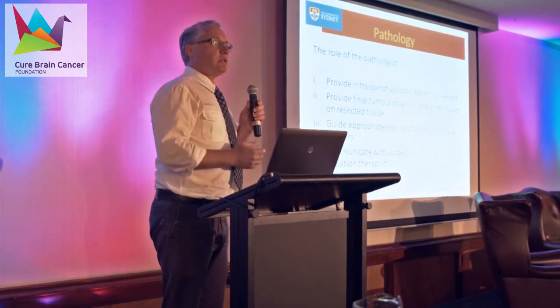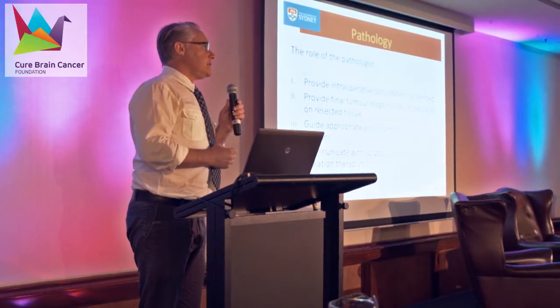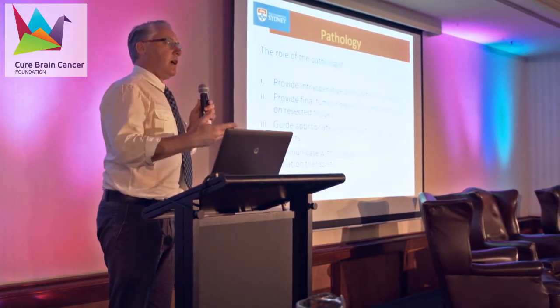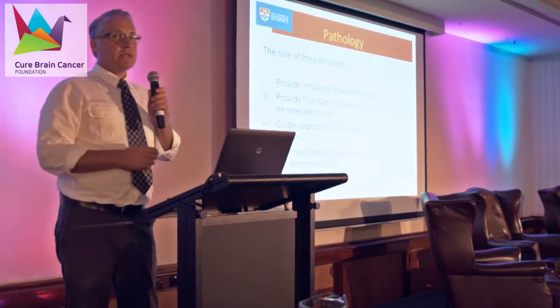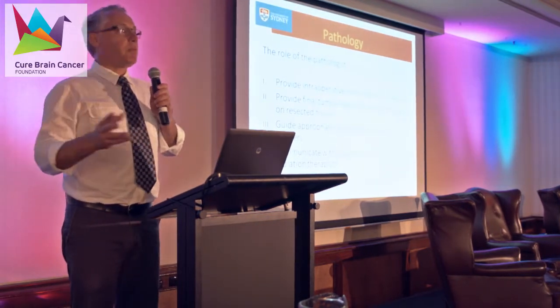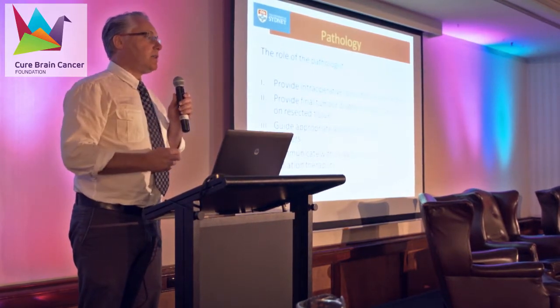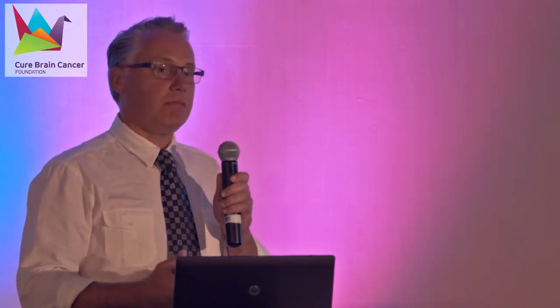Sometimes when the surgeons are removing a tumour they need to get a bit more information to guide parts of their surgery. What they will do is stop the operation, take a small piece of tumour and send it to the path lab. The pathologist will then have a quick look at it, give them a call back and say to them, 'yep, you're in tumour, you've got the target, you're in tumour.'